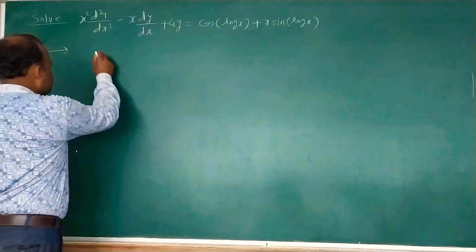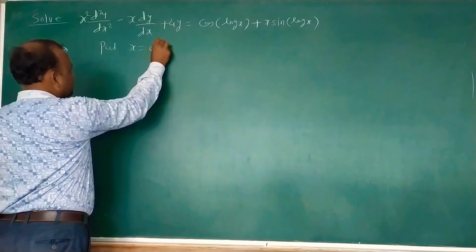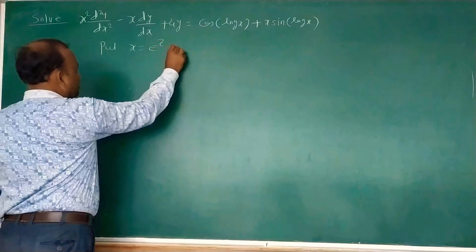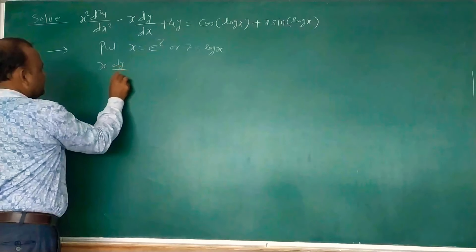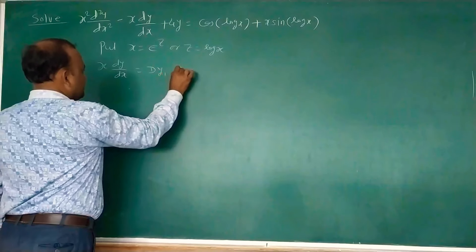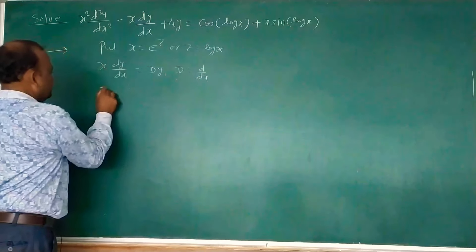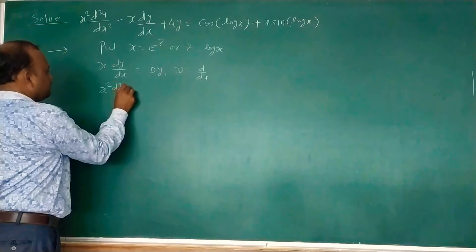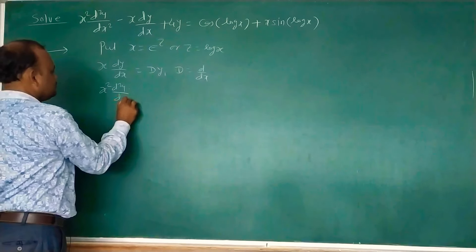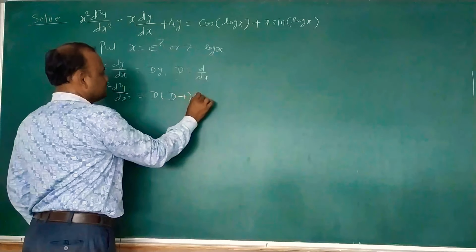For reducing that, we have to use the substitution x = e^z, or equivalently z = log x. Using this substitution, x·dy/dx equals D·y (where capital D is d/dz), and x²·d²y/dx² equals D(D−1)y.